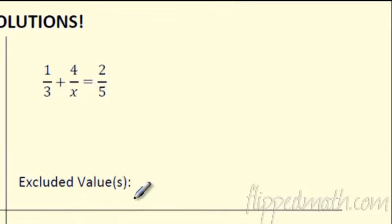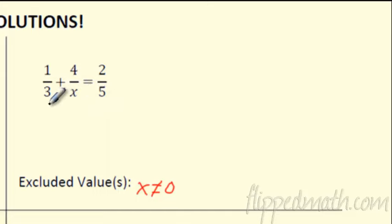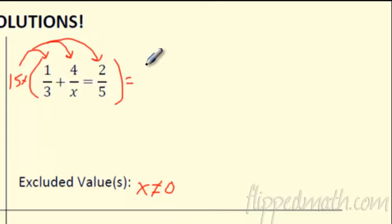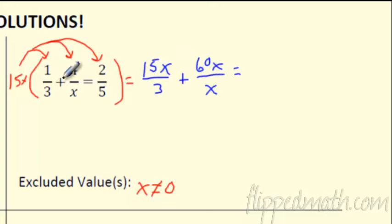Next one: excluded values. We can't divide by zero, so x is not allowed to equal zero. If we solve it and get x equals zero, it's an extraneous solution. What's the common denominator? You can multiply all the denominators together: 3 times x times 5 is 15x. Distribute 15x to everyone: 15x times 1 over 3 gives 15x over 3, then 15x times 4 over x gives 60x over x, and 15x times 2 gives 30x — that's over 5.